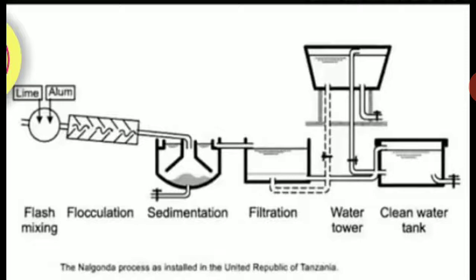How does fluoride increase in water? In most cases, fluoride increases in groundwater because of geochemical reactions in the earth. The rocks contain pegmatite veins — pegmatite is a type of rock that contains a first-part group of minerals. Due to the dilution of these minerals, the fluoride level increases in the water.